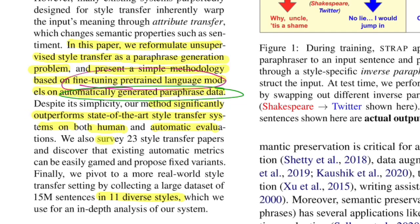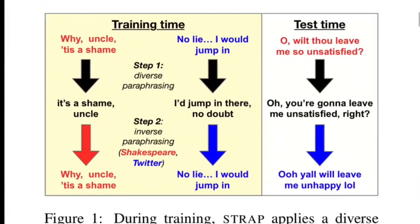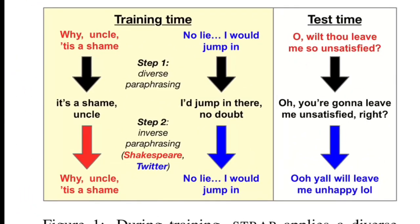While surveying 23 style transfer papers, the authors found that the automatic metrics people use can be fooled easily, so they also propose a new evaluation metric. The contributions include solving unsupervised style transfer, an extensive 11-style evaluation set, outperforming state-of-the-art on both human and automatic evaluation, and proposing a new automatic evaluation metric.